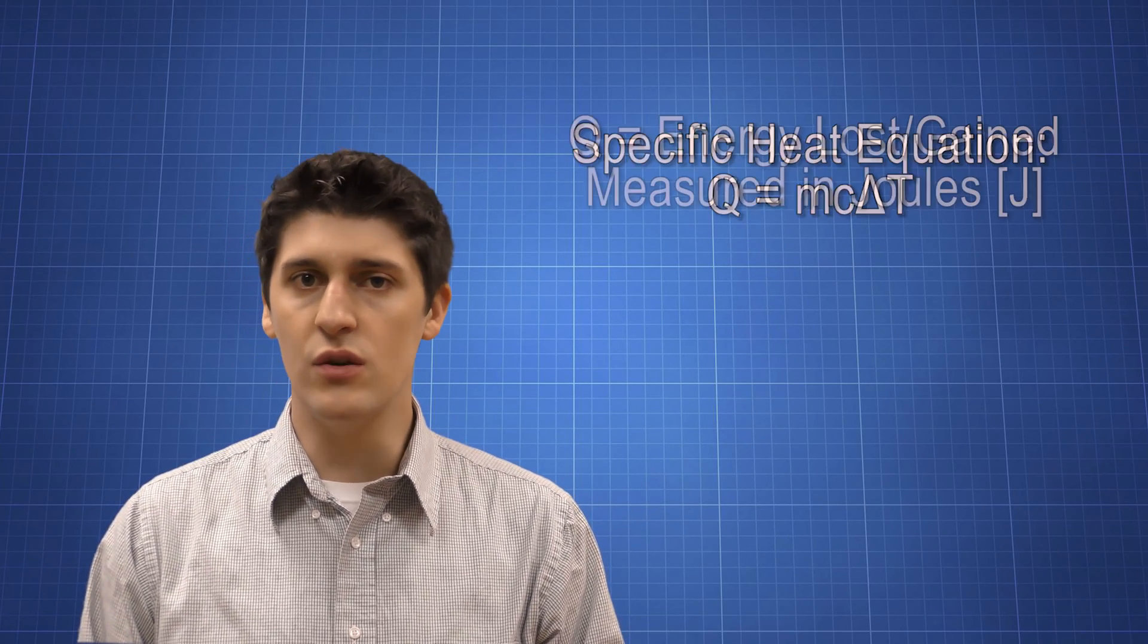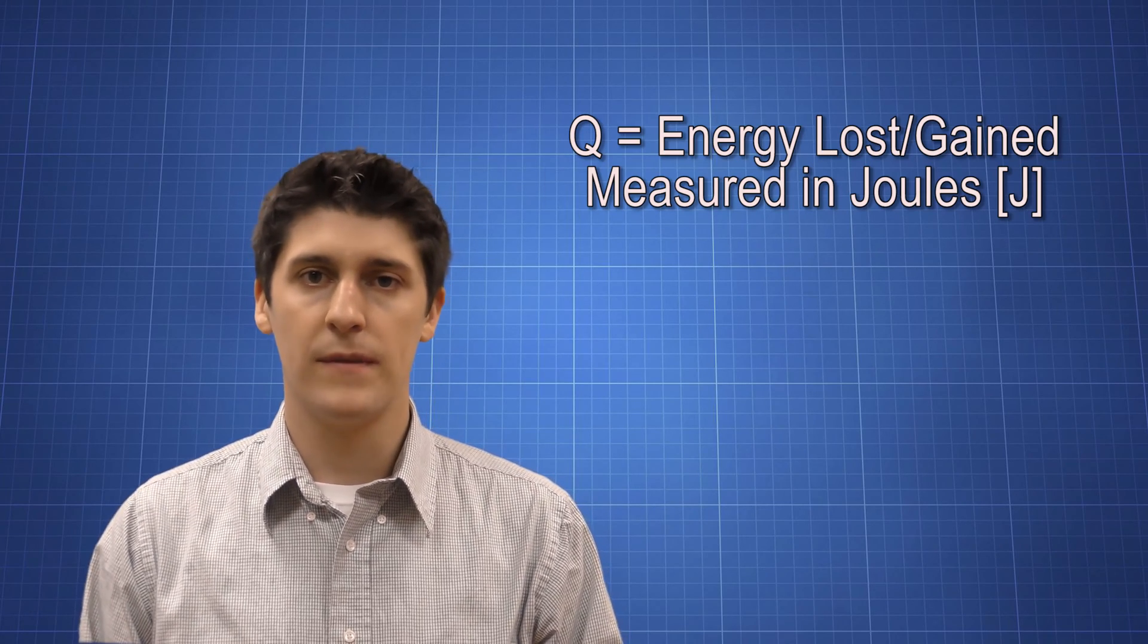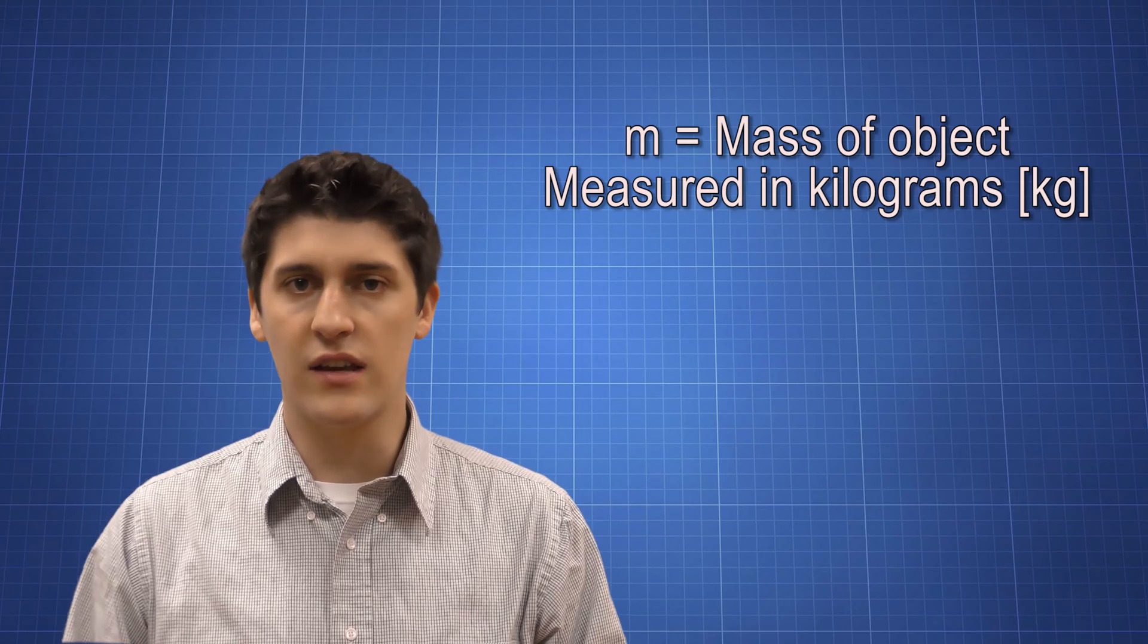In the equation, Q stands for heat change, or energy. It's measured in joules. M is mass, and in this case, we're going to use kilograms.